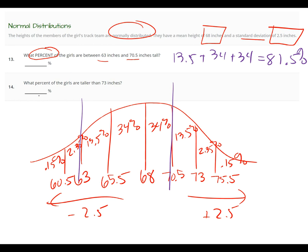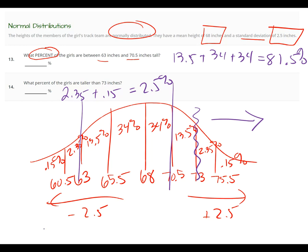The second question asks what percentage of girls are taller than 73 inches. Go to 73 inches and look for taller — add together 2.5% and 0.15%, which gives 2.65%, so approximately 2.5% when rounding.